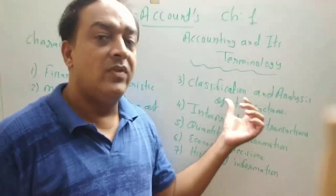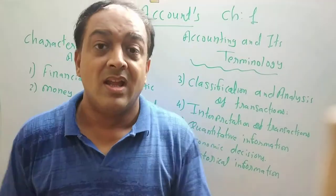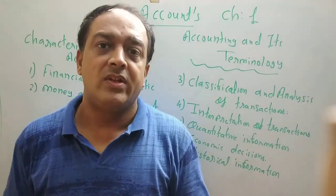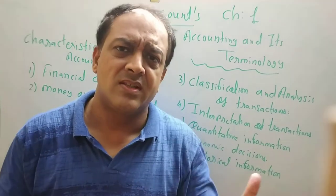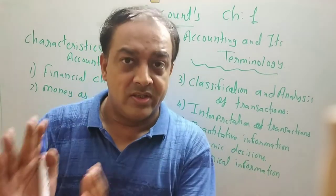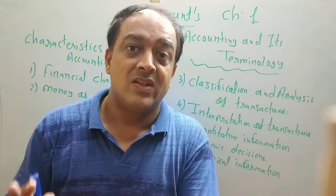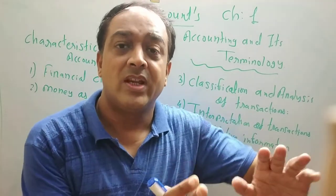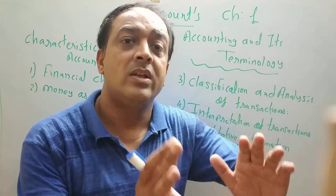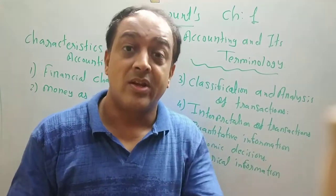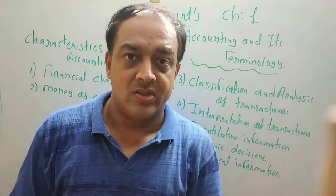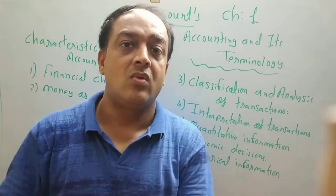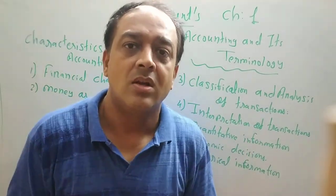Next point: classification and analysis of transaction. In business there are many transactions — cash transactions, credit transactions, purchase transactions, sales transactions. So transactions are classified: if there is a cash transaction, record in cash transactions; if there is a credit transaction, record in credit transactions; if there is a purchase, record in purchase account; if there is a sales, record in sales account. That is called classification.